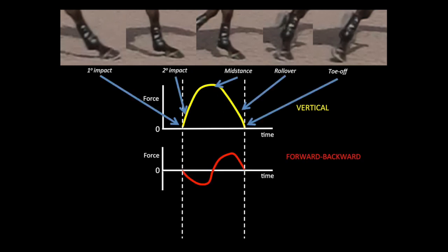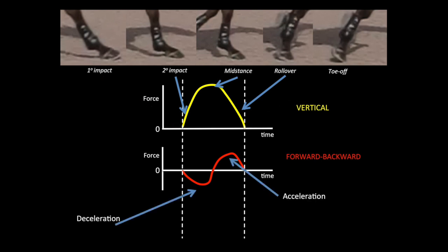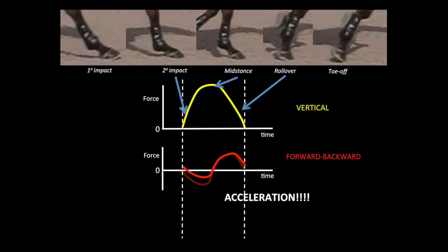Next, the force profile looks quite different when we examine the forward and backward direction. When the hoof first touches down, similar to runners, there will always be some negative forces, which indicate braking. As the body moves forward to propel itself to the next step, the force becomes a positive acceleration force, contributing to moving the horse and rider forward. In efficient movement, we want the braking forces to be as small as possible, but these negative forces at primary and secondary impact will never fully disappear. If the horse and rider want to accelerate, the positive force needs to be bigger than the negative force in the forward-backward direction for each step. Braking or decelerating is the opposite, where the negative forces are larger.